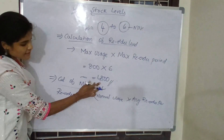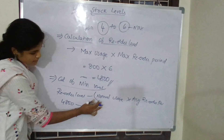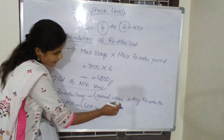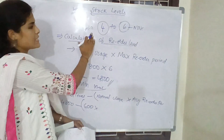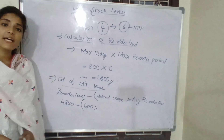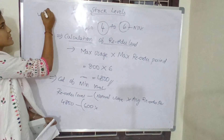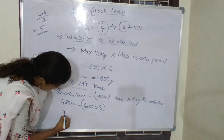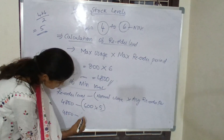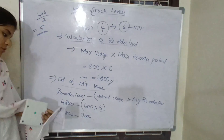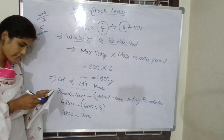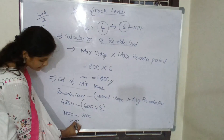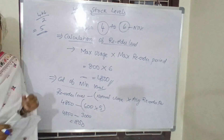Reorder level — how much we have calculated just now? 4,800. Minus normal usage in the question: 600, into average reorder period. 4 is minimum, maximum is 6. So the average of 4 and 6 is 4 plus 6 divided by 2, which gives 5. So 600 into 5 is 3,000. From 4,800 minus 3,000, you will get 1,800. So minimum level is 1,800.